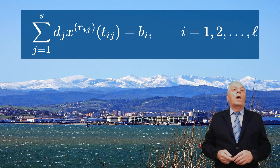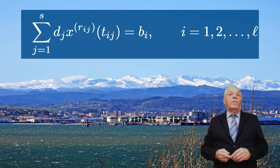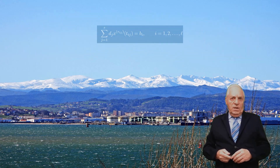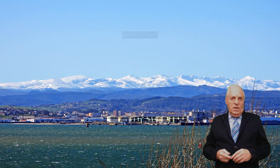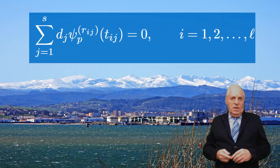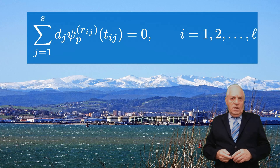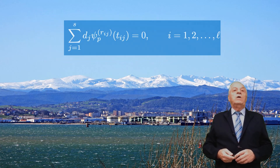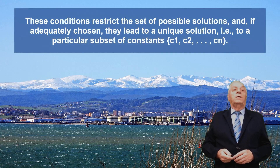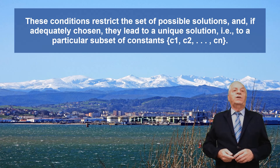Here, x^(Rij)(tij) refers to the Rij-th derivative of x(t) at tij. In particular, one can choose the particular solution Cp(t) to be the solution to the initial problem with homogeneous conditions, which implies these conditions. This condition restricts the set of possible solutions and, if adequately chosen, leads to a unique solution — that is, a particular subset of constants C1, C2, ..., Cn.